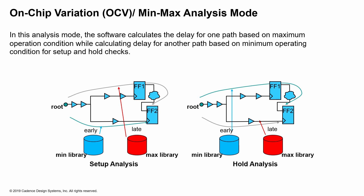When you do your setup analysis, all your capture clock paths and data paths have delays coming from your max library or late library, and the capture clock path delays are coming from the min library or early library. For hold analysis, you reverse those: for the early paths everything is coming from the min library, and for the late path, which is the capture clock path, the delays are coming from the max library.